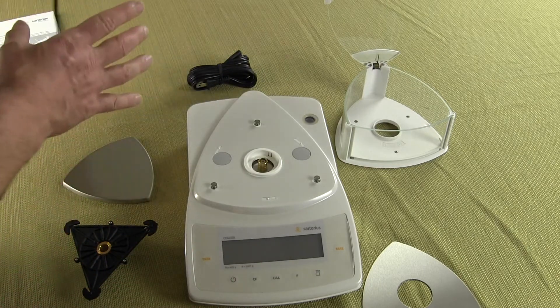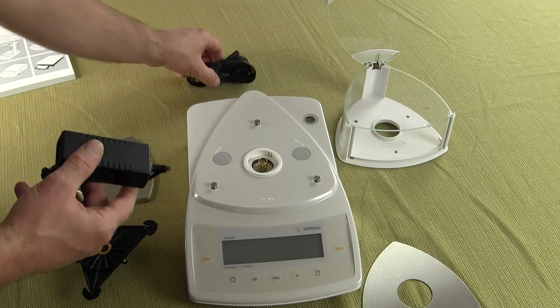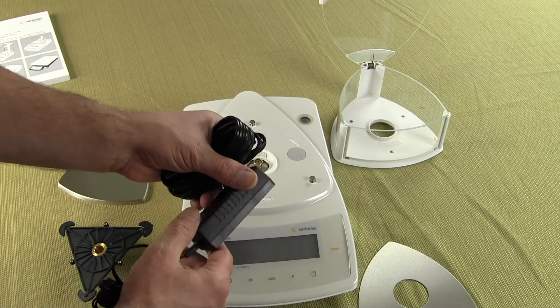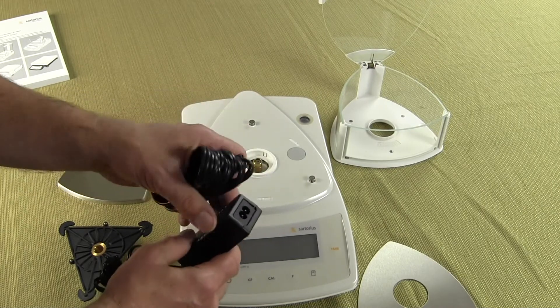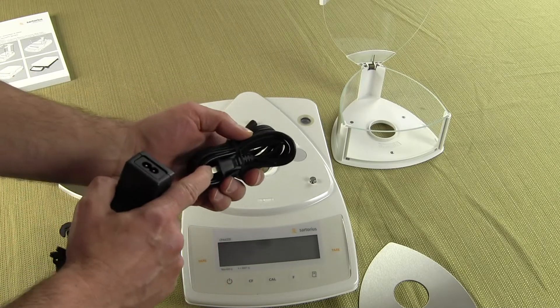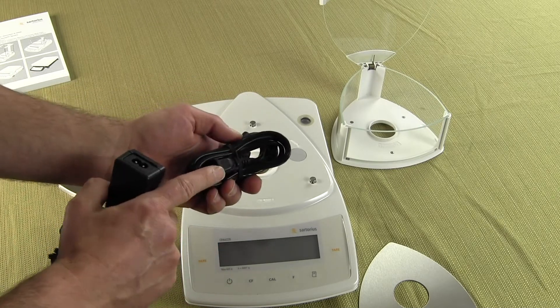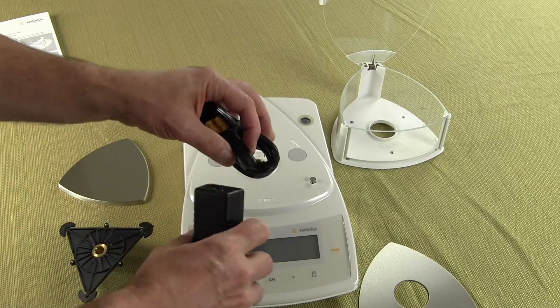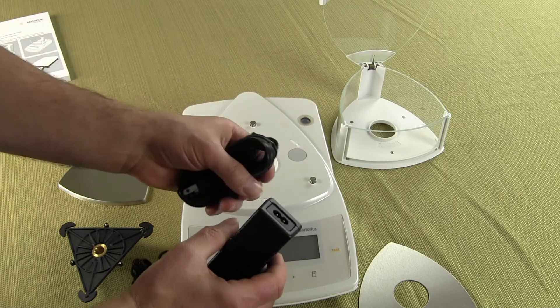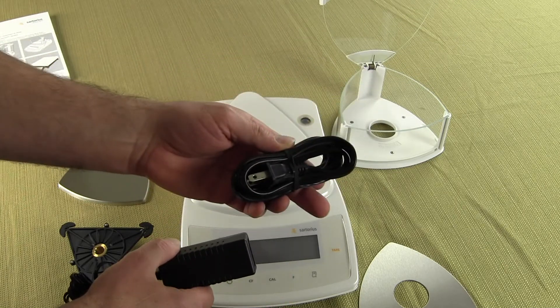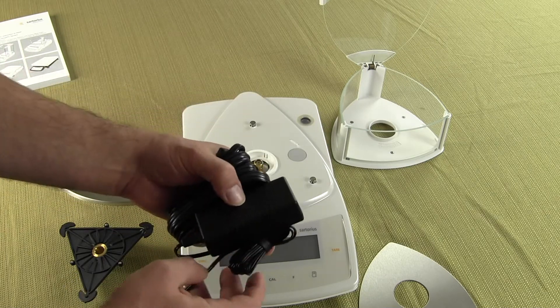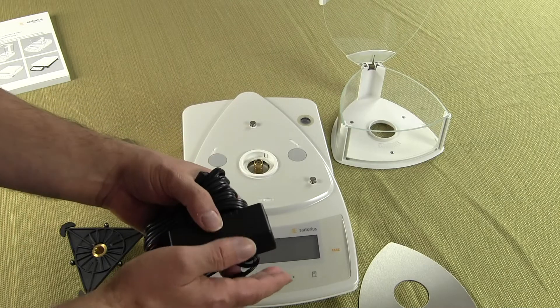We also have the power supplies. The new power supplies coming from Sartorius are universal. They'll automatically sense the voltage, the input voltage. So since we sell only in the US we supply the adapter. Typically in the United States you just plug into a 120 and then this connector just plugs right in. Now if this balance was going overseas and you need a 220, the only thing you have to change is your line cord. So that's a new feature that Sartorius just started implementing with their balances over the last year.